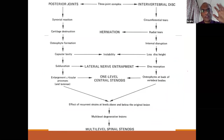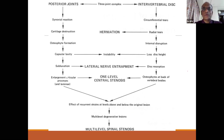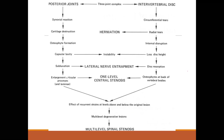In summary: posterior joint involvement leads to a cascade of synovial reaction, cartilage destruction, osteophytic formation, capsular laxity, and subluxation — all adding to articular process enlargement. The discs contribute through circumferential tears, internal disruptions, loss of disc height, disc resorption, and osteophyte formation leading to stenosis. When this happens at multiple levels, you get multi-level spinal canal stenosis.